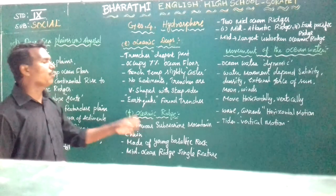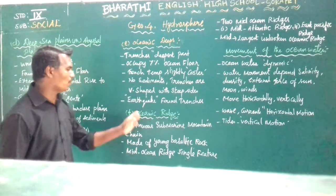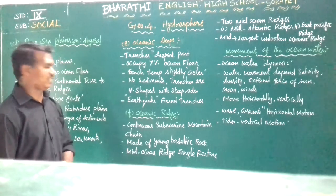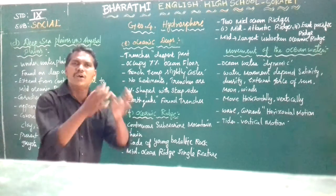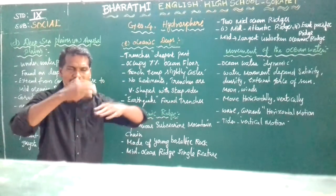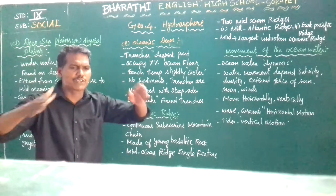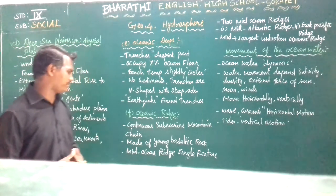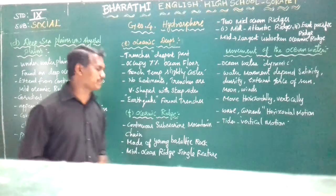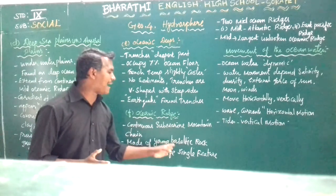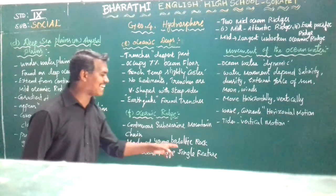The next important topic is oceanic ridge — the last important relief feature of the ocean. Oceanic ridge is a continuous submarine mountain chain. It is made up of basaltic rocks. The mid-ocean ridge is a single continuous feature with no gap, and it is made up of basaltic rock.